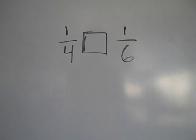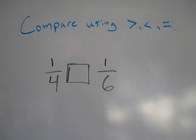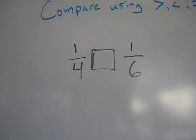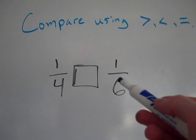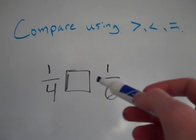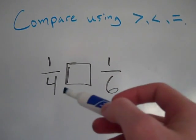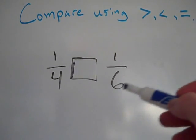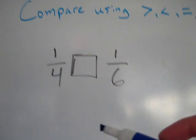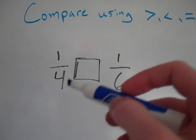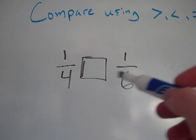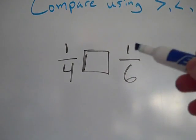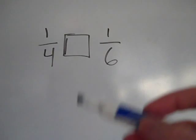I'm going to start off with one-fourth and one-sixth. Some people may be able to look at these two fractions and automatically know that one-fourth is bigger than one-sixth, because if they're both one piece, a whole cut into four pieces is bigger than a whole cut into six pieces if I'm given just one slice. You can imagine a pizza cut into four slices versus six slices — one slice of the four-cut pizza is going to be bigger.